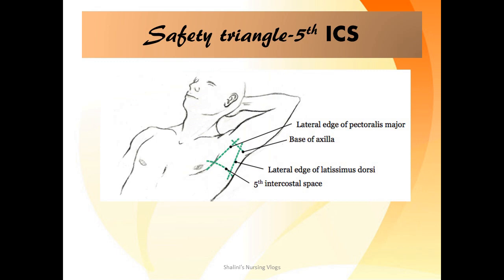Before talking about intercostal drainage, it is important to understand the safety triangle. The safety triangle is bordered on either side by the pectoralis major and the latissimus dorsi, on the upper side by the base of the axilla, and inferiorly by the fifth intercostal space. This is the safe zone where you can insert the needle, puncture, and drain out the fluid.